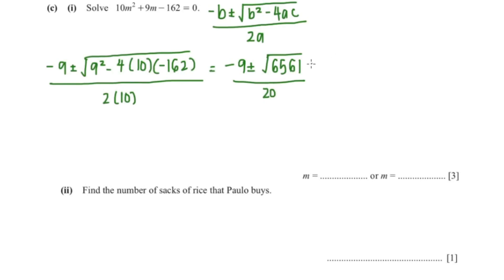So that would be negative 9 plus minus the square root of 6561 over 20. So the square root of 6561 is plus minus 81 over 20. So negative 9 plus 81 over 20 gives you 3.6. And negative 9 minus 81 over 20 gives you negative 4.5. And so your values for M are 3.6 and negative 4.5.